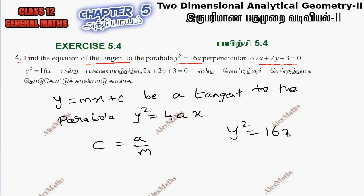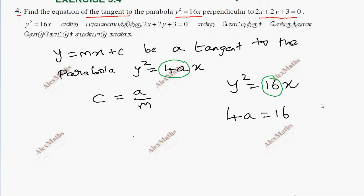Now the question has y square equal to 16x. Compare this parabola: 4a is equal to 16, so the a value is 4.